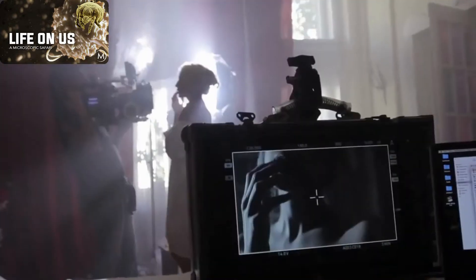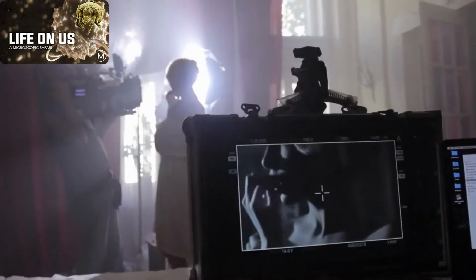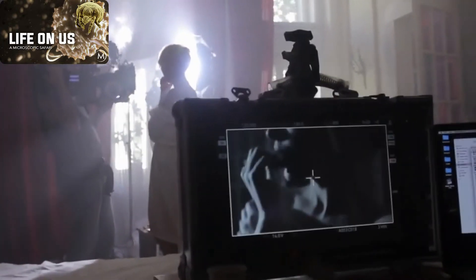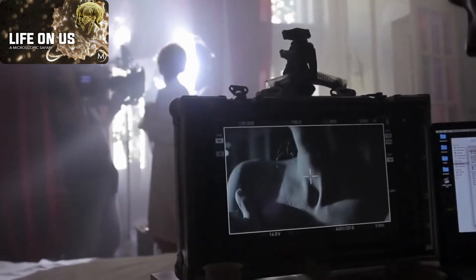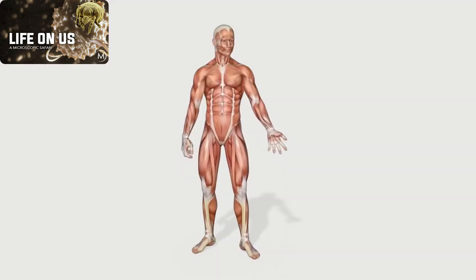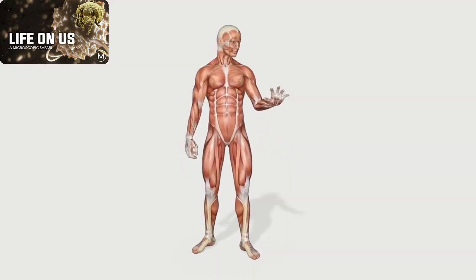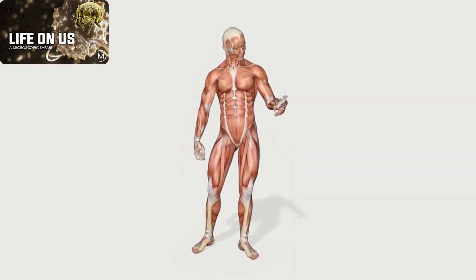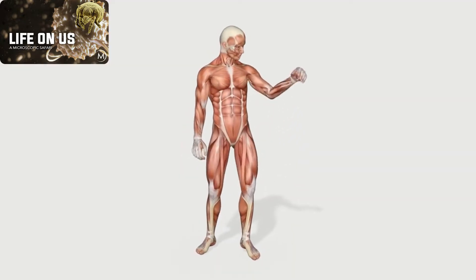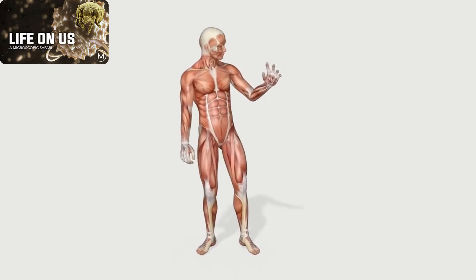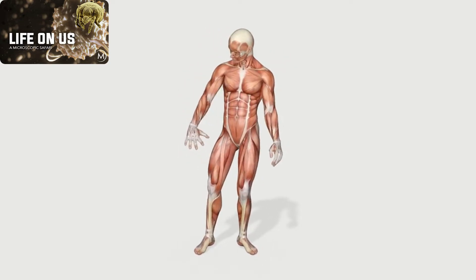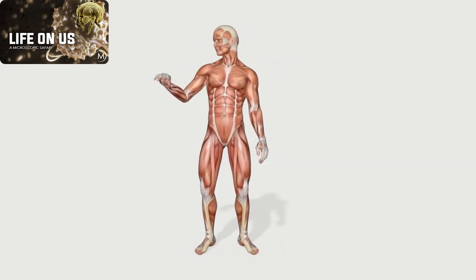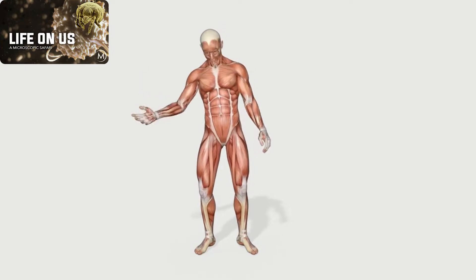The film is produced by Within and directed by Chris Milk. The film follows two characters, a sperm cell and an egg cell, as they travel through various parts of the body and explore the different stages of life.